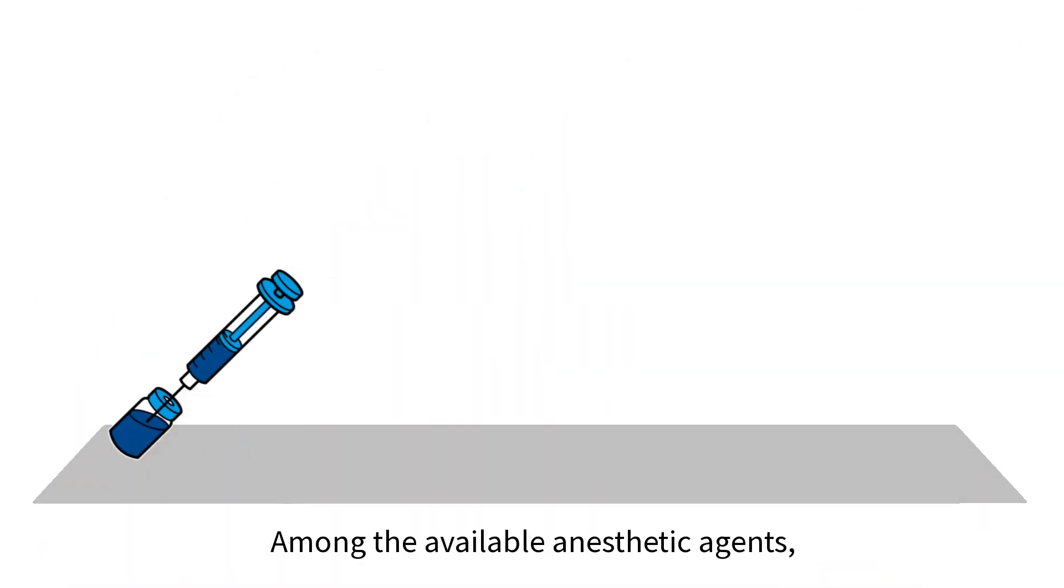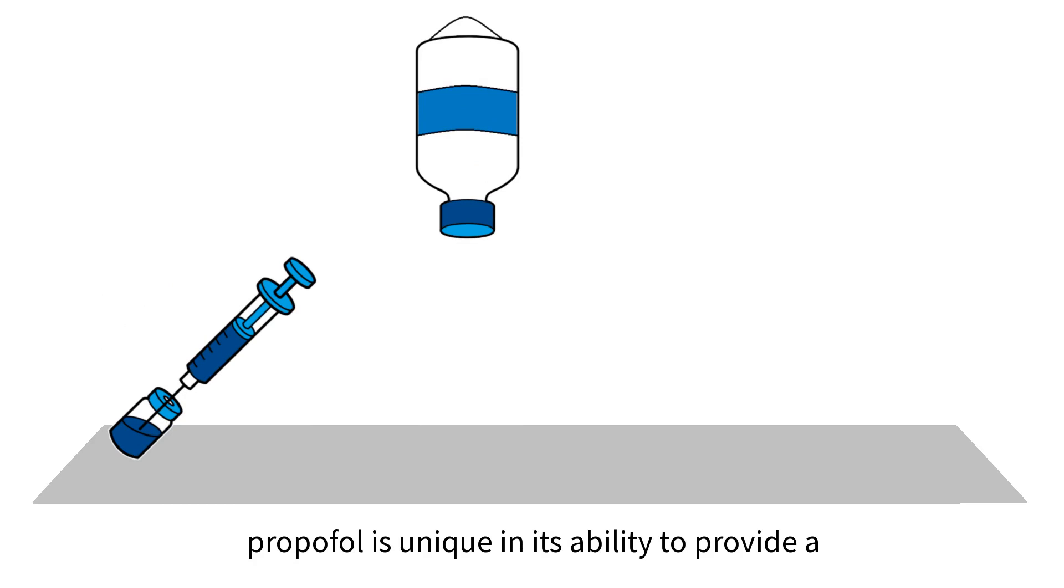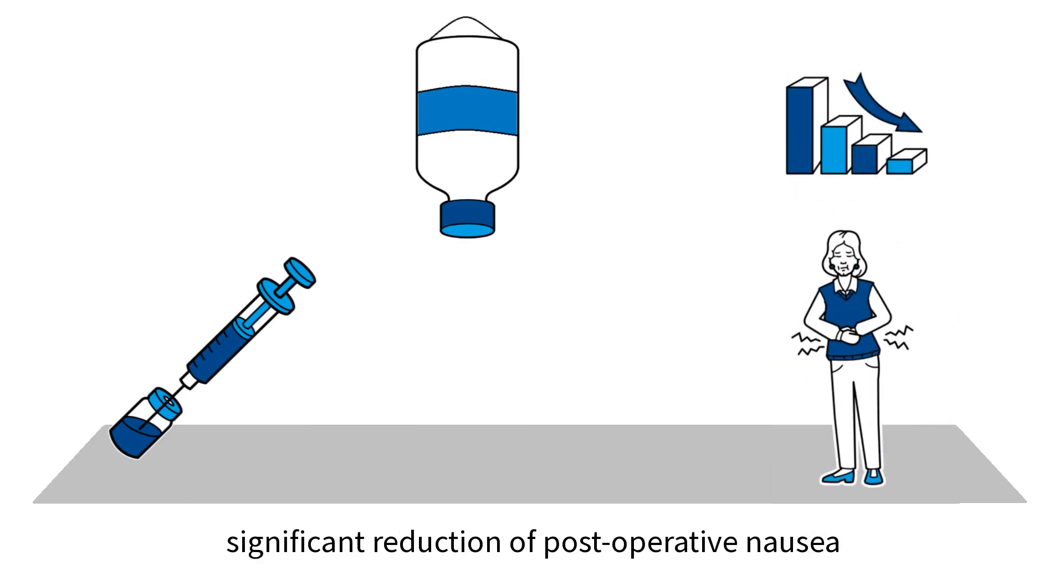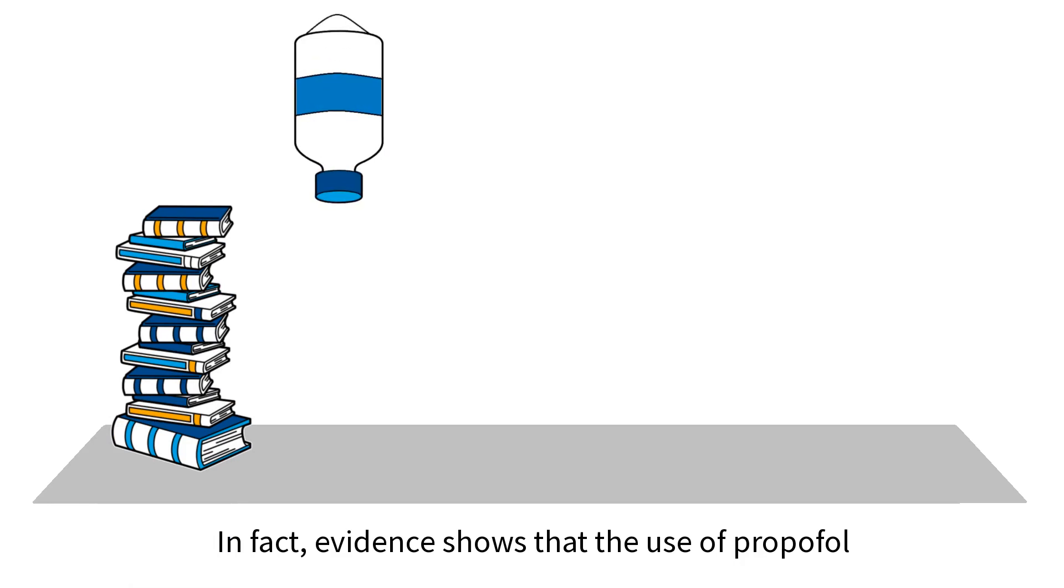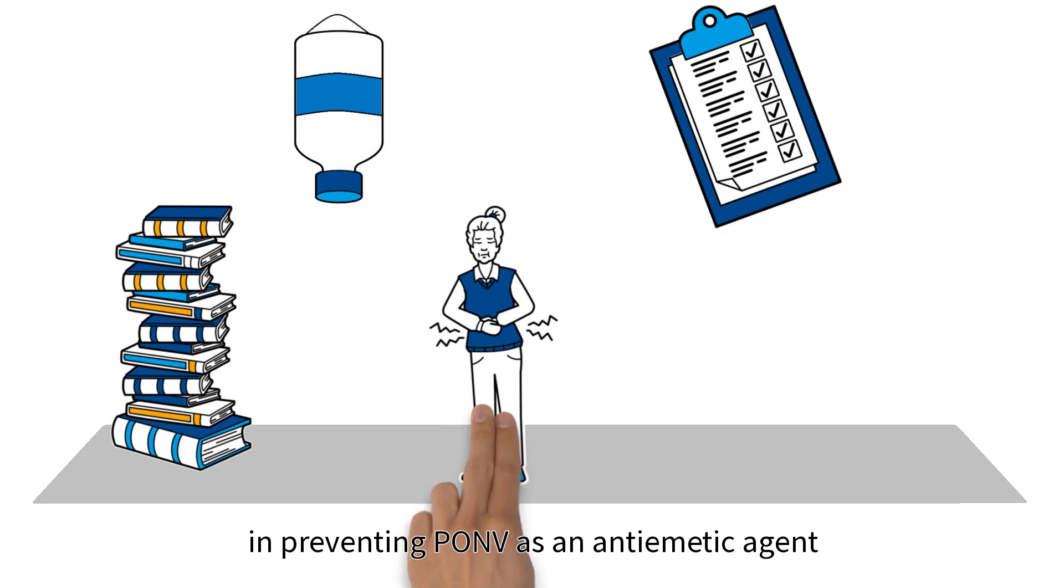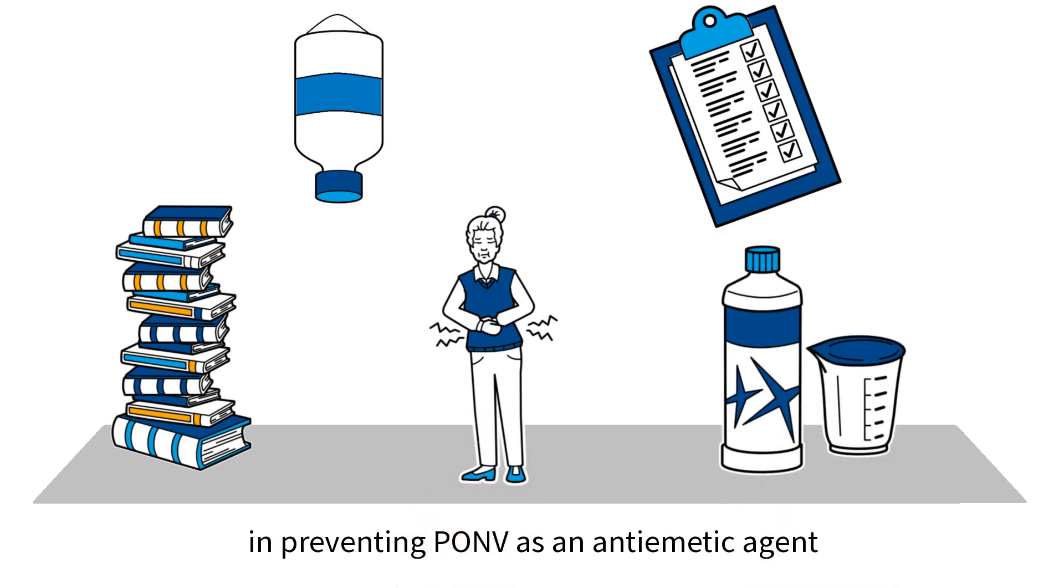Among the available anesthetic agents, propofol is unique in its ability to provide a significant reduction of post-operative nausea and vomiting, or PONV. In fact, evidence shows that the use of propofol as part of an anesthetic plan is as effective in preventing PONV as an anti-emetic agent such as Ondansetron or Decadron.